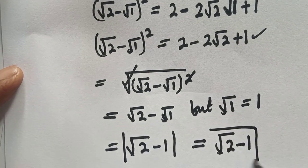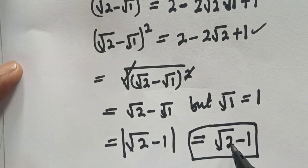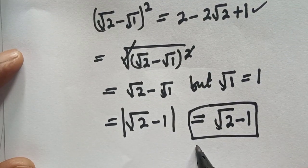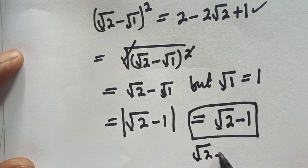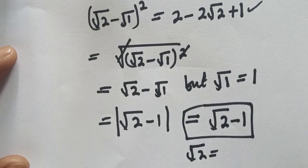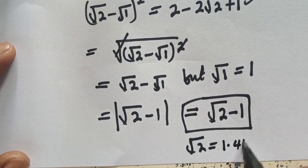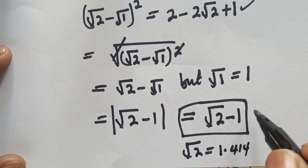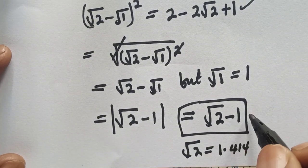And this is the final answer because root 2 is positive. If you check very well, root 2 is 1.414. Therefore root 2 is greater and our final answer is root 2 minus 1.